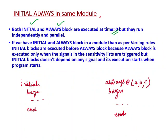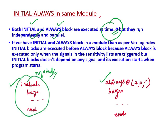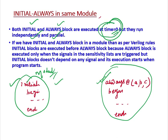Both Initial and Always Blocks are executed at time equal to zero, but they run independently and in parallel. If inside a module there is one Initial Block and one Always Block, they run independently and don't depend on each other. Both are executed at time equal to zero.